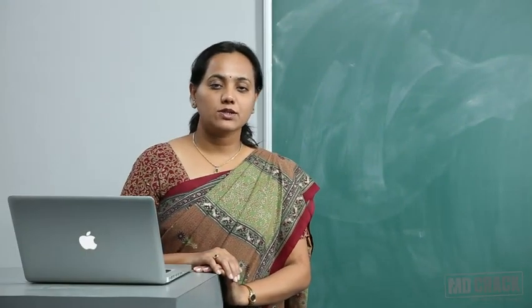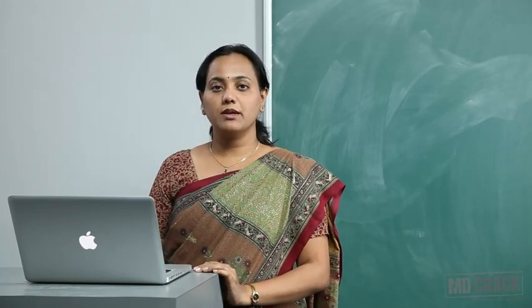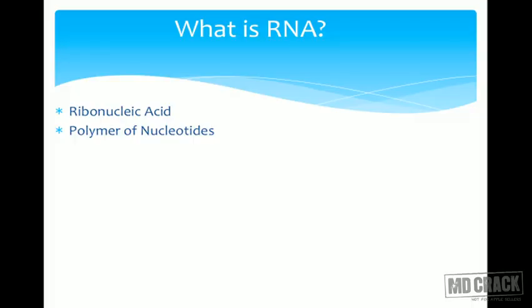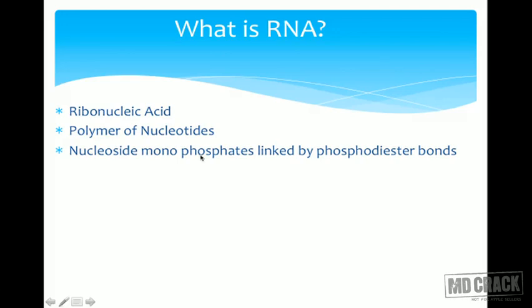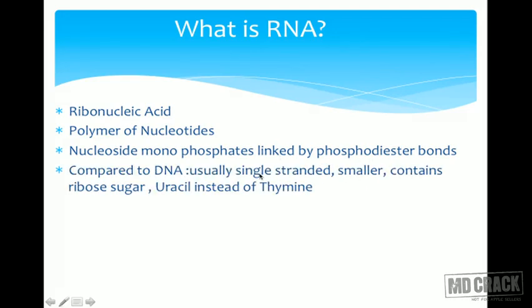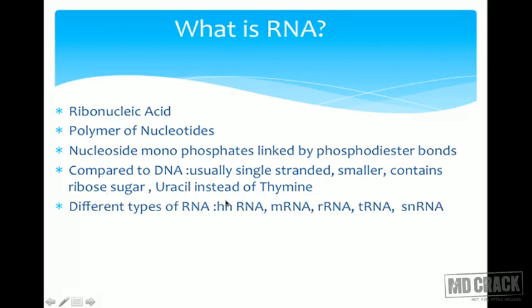Welcome students to this section on transcription. Before we go to transcription proper, let us have a brief recapitulation about the different types of RNA. RNA is ribonucleic acid — a polymer of nucleotides, specifically nucleoside monophosphates linked by phosphodiester bonds. Compared to DNA, RNA is single-stranded, smaller, contains ribose sugar, and uses uracil instead of thymine.